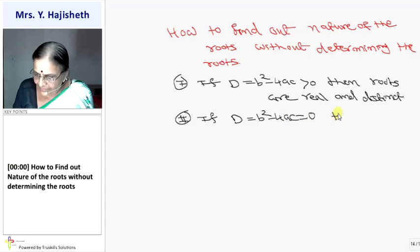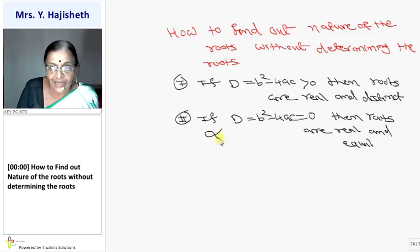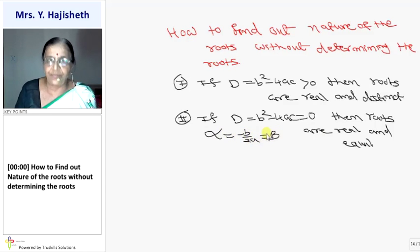So then, roots are real and equal. And if alpha and beta are two roots, then alpha is also minus b by 2a, and beta is also minus b by 2a.